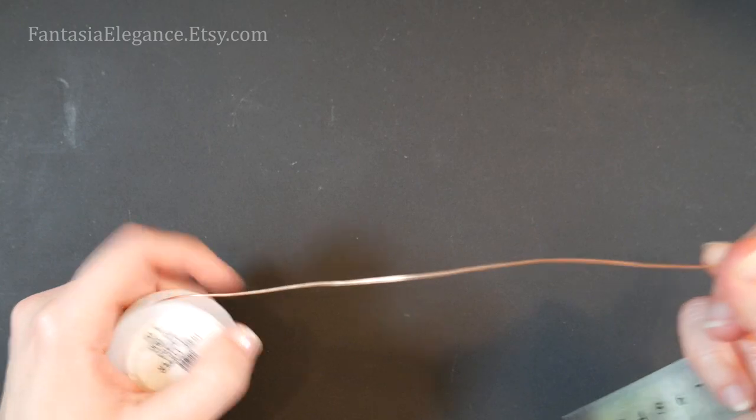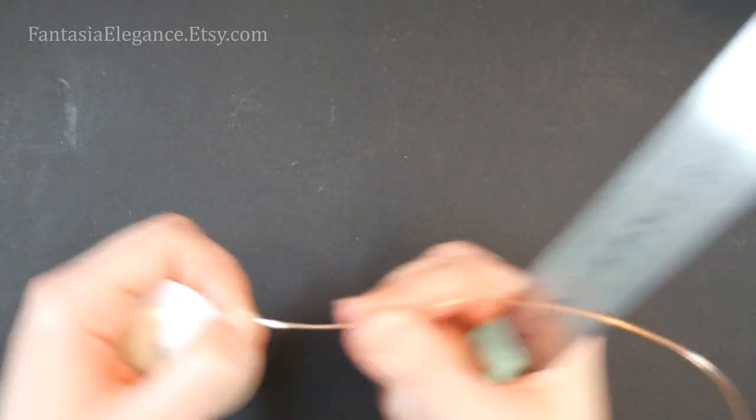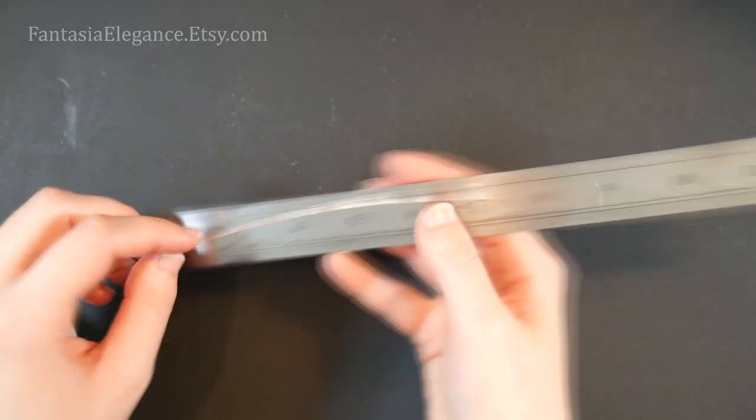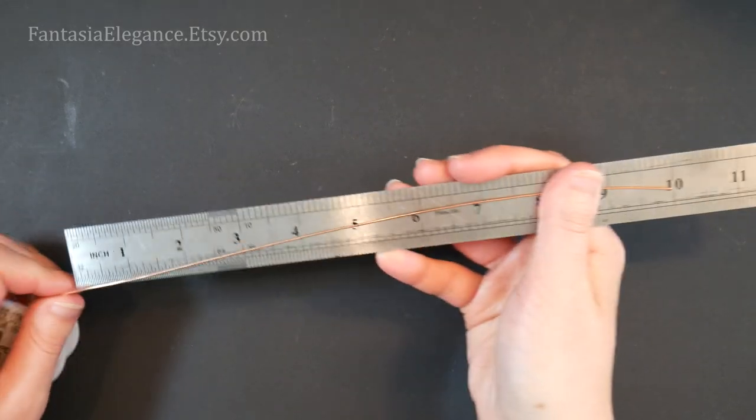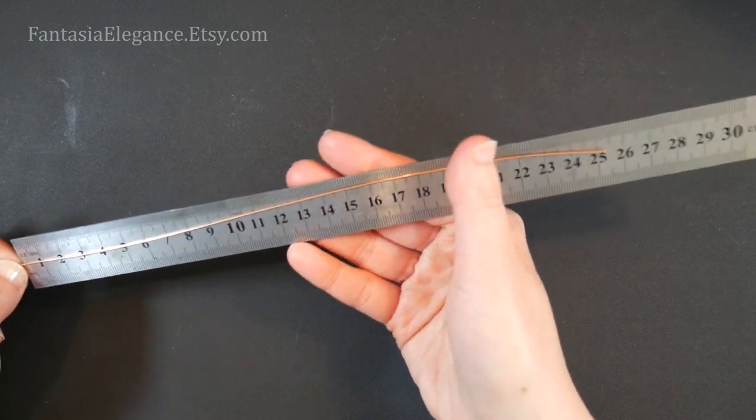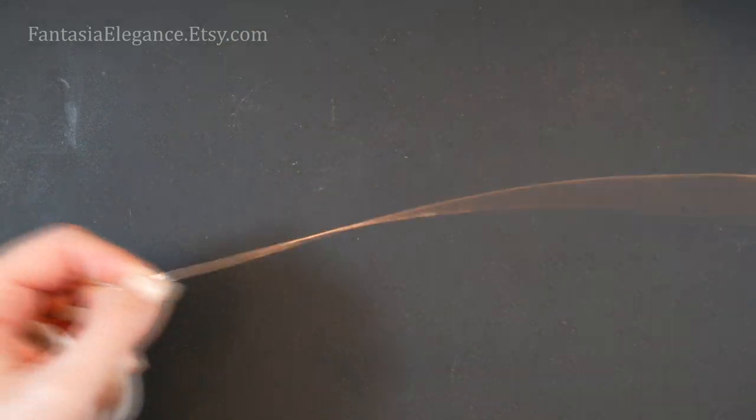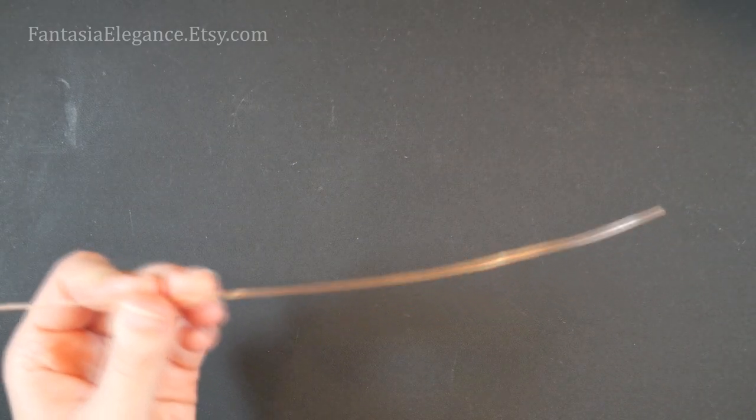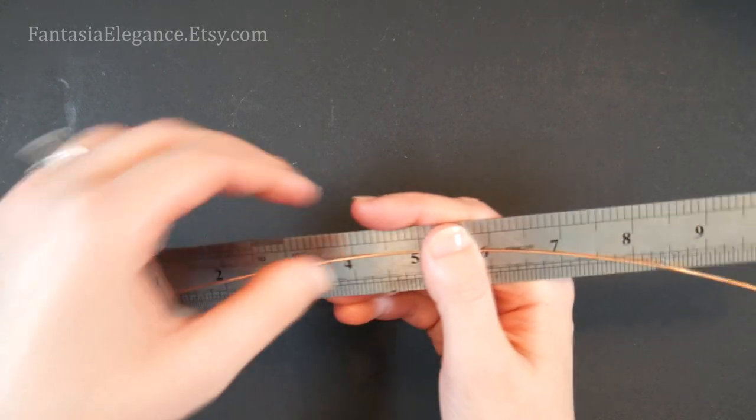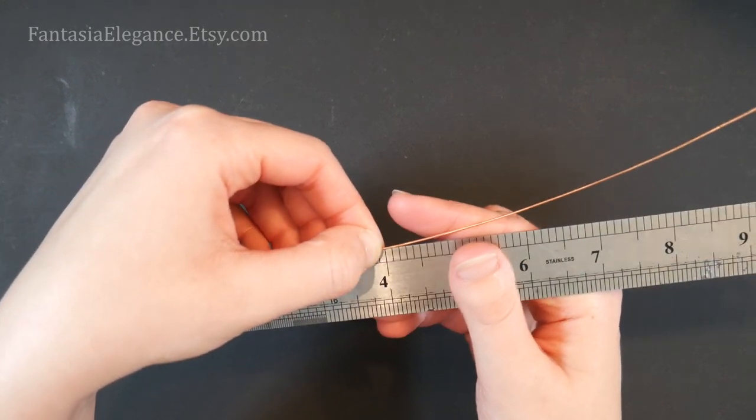So let's go ahead and wind some off the spool, straighten it out here a little bit. So a 10 inch piece—for those of you in metric that's going to be just about 25 and a half centimeters. For our first bend, we are going to measure in from one of the ends.